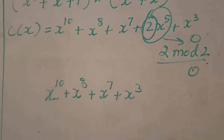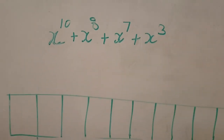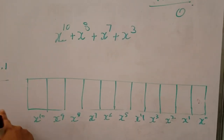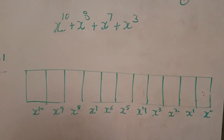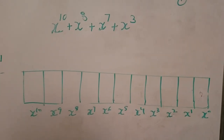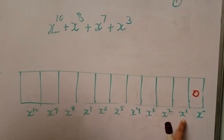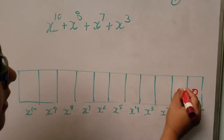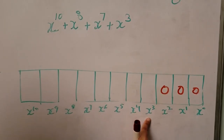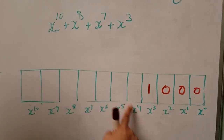Let's change this polynomial into a binary number. To generate the binary number from this polynomial, we create a table from x to the power 10 all the way to x to the power 0. The coefficient for x to the power 0 is 0, for x to the power 1 is 0, for x to the power 2 is 0, for x to the power 3 is 1, and for x to the power 4 is 0.